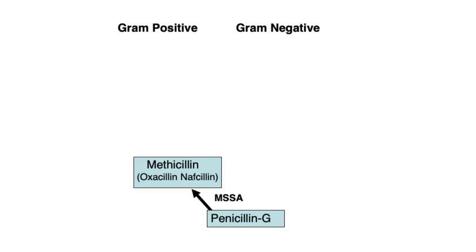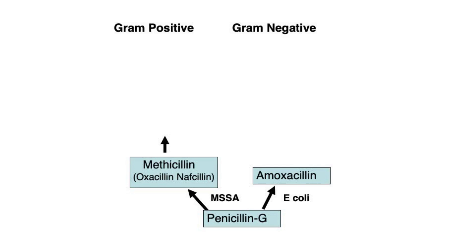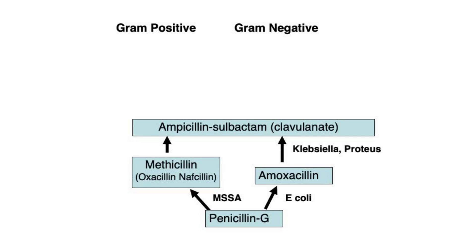Next, ampicillin and its oral alternative amoxicillin were created. This aminopenicillin not only covers the same gram-positives as penicillin, but also kills some gram-negative bacteria, covering a relatively small percentage of E. coli, Proteus, and Klebsiella. To broaden its coverage, the beta-lactamase inhibitor sulbactam was added to ampicillin, and clavulanate to amoxicillin. This addition has increased the percentage of susceptible E. coli, Proteus, and Klebsiella, and rendered these agents effective against MSSA.